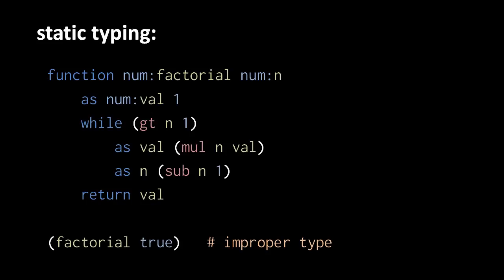Our factorial function's parameter n was always meant to only receive number values, and now with a type declaration, any call to factorial that erroneously passes any other kind of value can be detected before running the code.